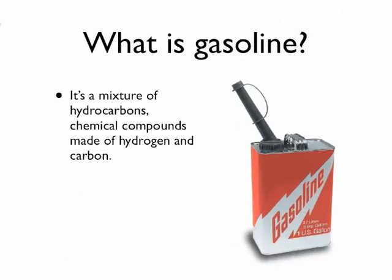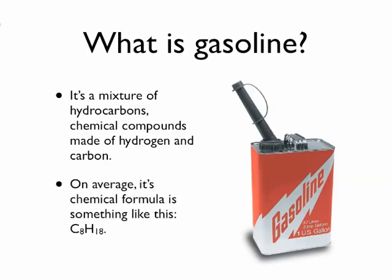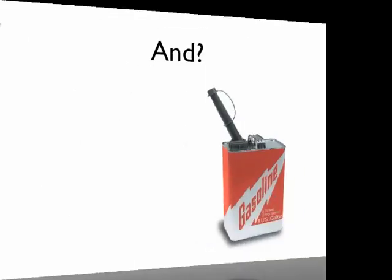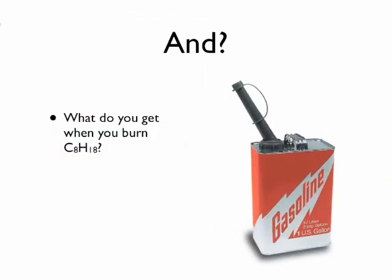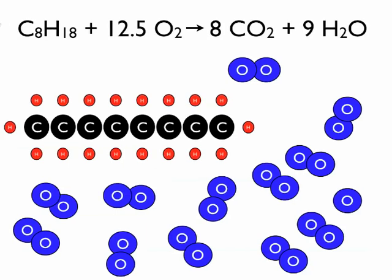Gasoline is a mixture of a collection of hydrocarbons. Hydrocarbons are organic compounds made of hydrogen and carbon. On average, gasoline has a chemical formula something like C8H18 — that's octane. And what do you get when you burn octane? You get carbon dioxide and water. The chemical equation looks like this, and drawing it schematically, the molecules look something like that in schematic representation.